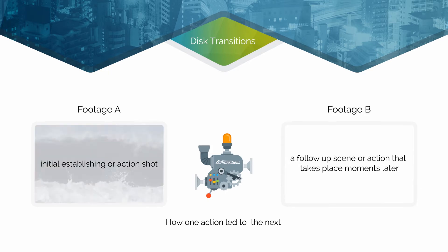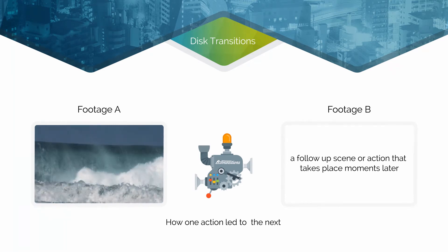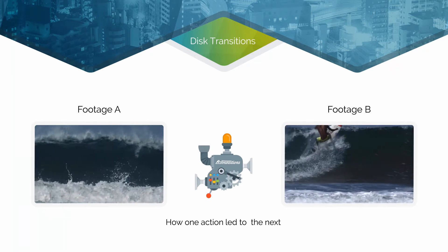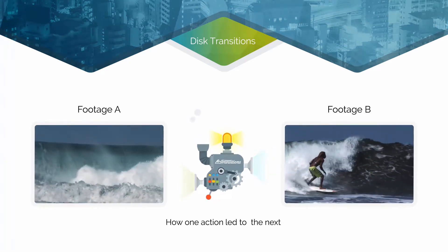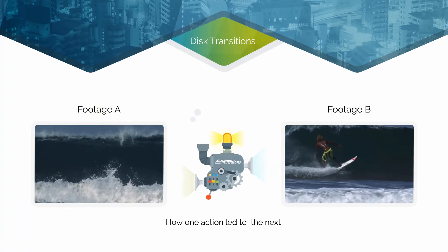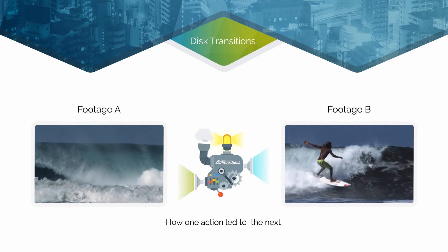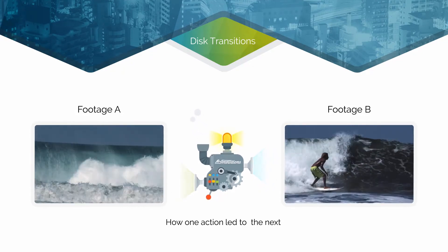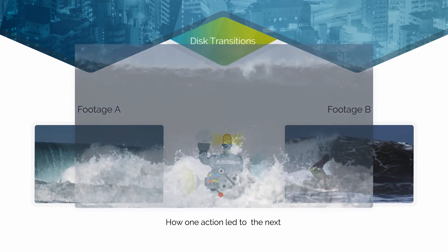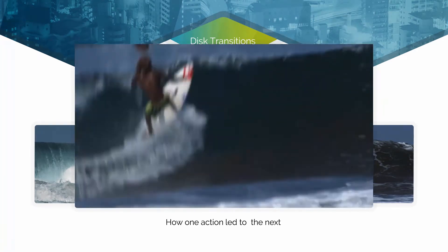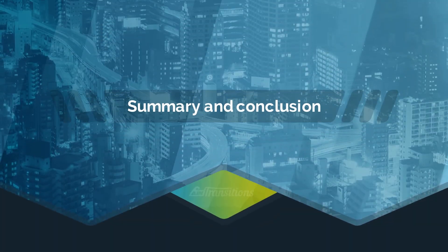In this example, our story starts off with a clip of a giant wave in the sea. This gives the viewer an idea of where the story is set and how massive these waves are. We can then apply the disc transition and introduce our character riding one of these huge waves for an immediate and dramatic action scene in the story.